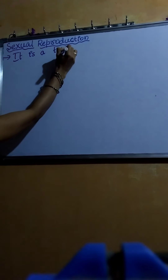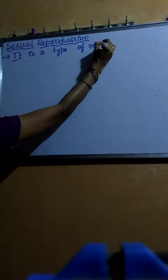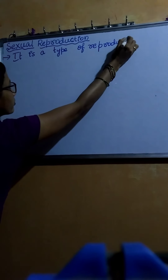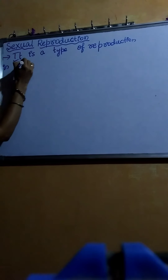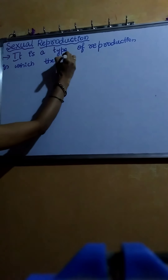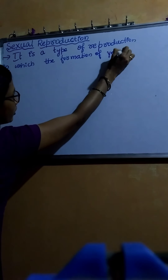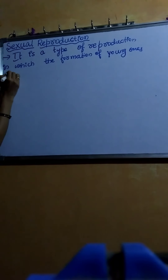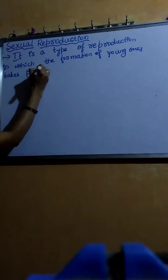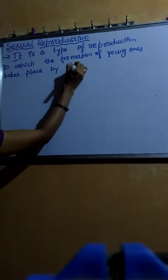Sexual reproduction is a type of reproduction in which daughter organisms or young ones are produced by the formation and fusion of gametes. The formation of young ones takes place by the fusion of gametes.